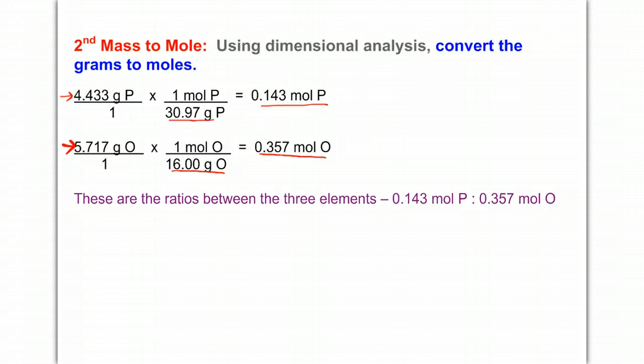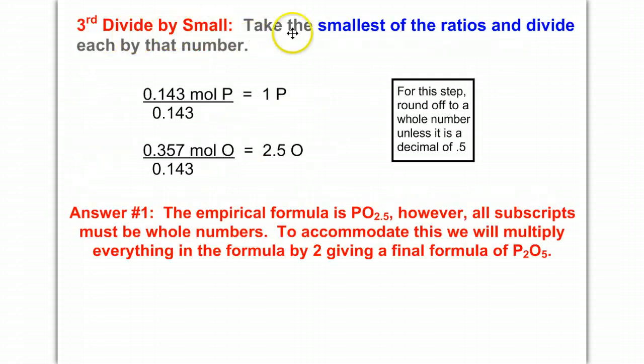Third step is divide by small. Take the smallest of those ratios and divide. 0.143 is smaller than 0.357, so I'll divide both by 0.143. Notice that one phosphorus is a whole number, but we end up with 2.5 oxygen. That's a decimal, we're going to have to fix that. So I end up with a formula of PO2.5.